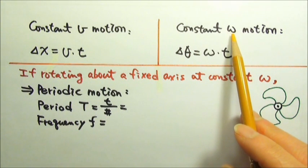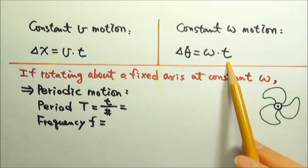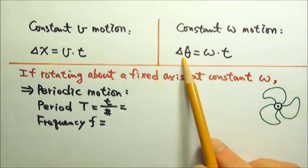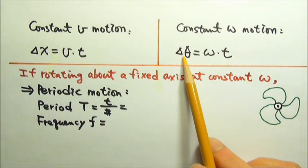For constant angular velocity motion, delta theta is omega times time. In one circle, the angular displacement is 2 pi radians.